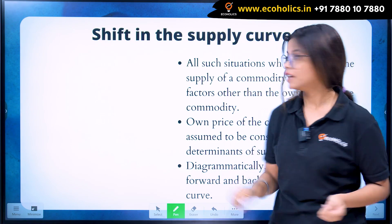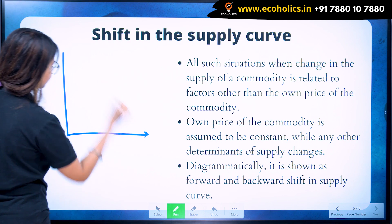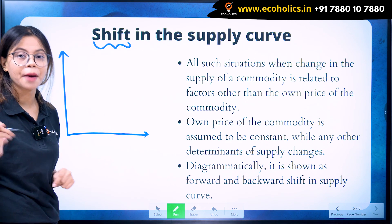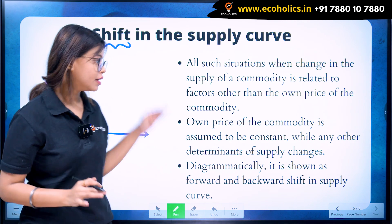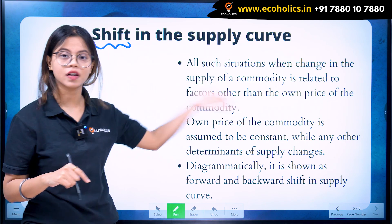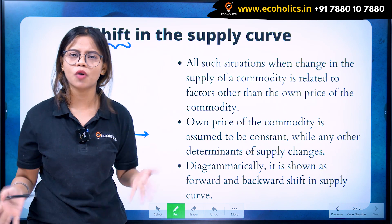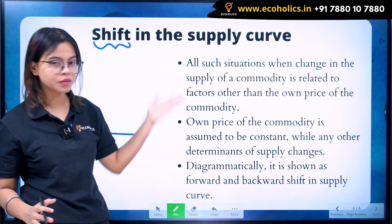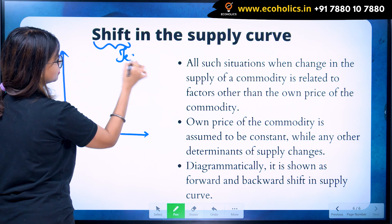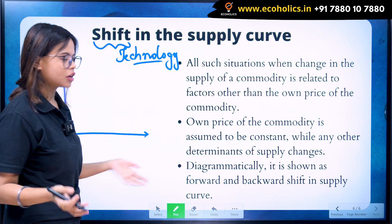Now let's move further and understand what the shift in the supply curve means. Let's draw a graph to understand this. One important thing to note: the shift in the supply curve is not happening due to the own price of the commodity. The shift is happening because of the other determinants of the supply curve — raw material, technology, government policy. We'll take technology as an example. Suppose there is some kind of technological upgradation in the production of pens.